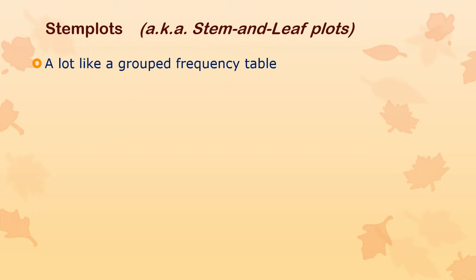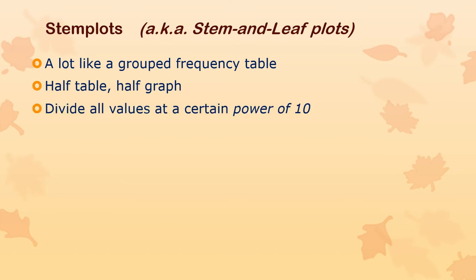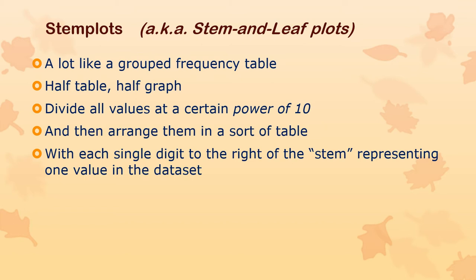A stem plot is a lot like — actually a huge amount like — a grouped frequency table. You can actually make a stem plot from a grouped frequency table. To make one, you need to divide all the values at a certain power of 10. You could divide them at the decimal point, or one, two, or three positions to the right or left. Where you divide depends on what your data are. With visualizations, you're always trying to make sense out of what's happening — representing things in a way that humans find easy to understand. With the stem plot, you might try a couple of different divisions before you figure out the one that works.